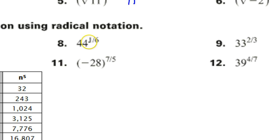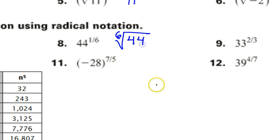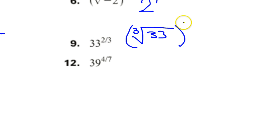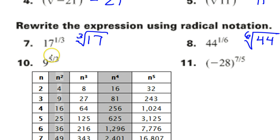44 to the 1/6 power is just the 6th root of 44. For number 9, 33 to the 2/3 power: 2 is the power and 3 is the root, making this the cube root of 33, and 2 is the power so we square it. For number 10, power over root: 5 is the power, 3 is the root, so that's the cube root of 9 to the 5th power.